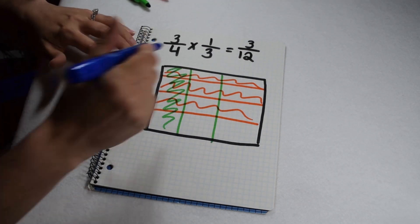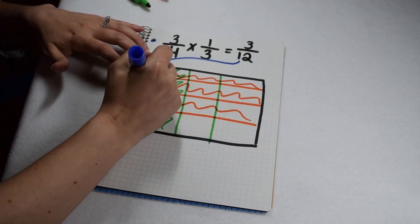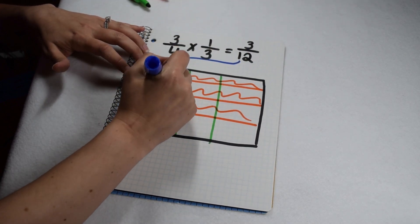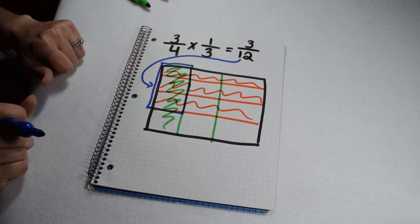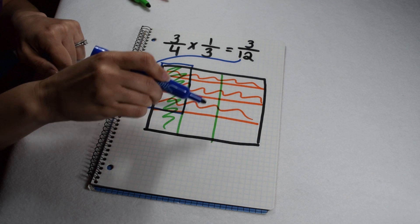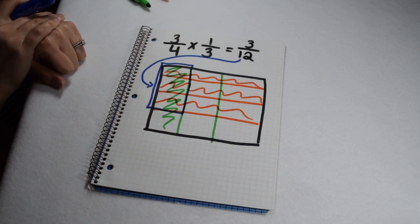Now, our solution is illustrated in the part that was double shaded for both of those. We can see that there's 3 boxes that were shaded for both fractions out of what we broke into 12 total in our area model to give us a solution of 3/12.